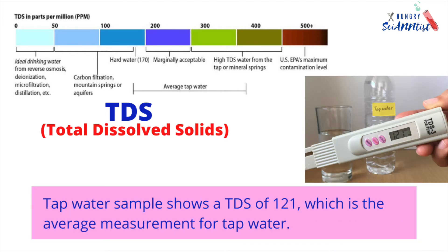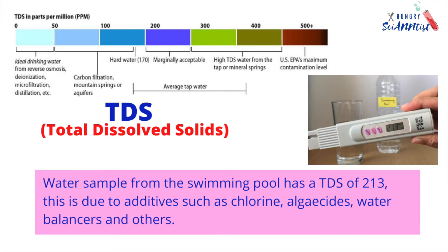Tapped water sample shows a TDS of 121, which is the average measurement for tap water. Water sample from the swimming pool has a TDS of 213. This is due to additives such as chlorine, algaecides, water balancers, and others.